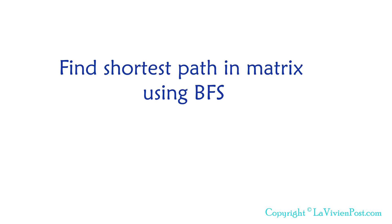This is the big O notation. The time complexity is m times n. The space complexity is m times n as well. That's it for find shortest path between cells in matrix. Please leave your comment below. I'm Vivian. Thank you for watching. Remember to like, share and subscribe. I will see you soon.